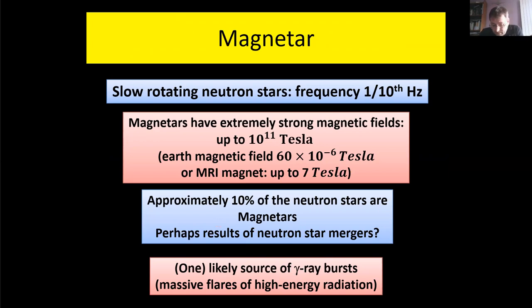There are special cases of neutron stars which are called magnetars. These are slow rotating neutron stars with frequency of a tenth of a Hertz, compared to the usual one Hertz or the very fast one, if you remember, with 716 Hertz.